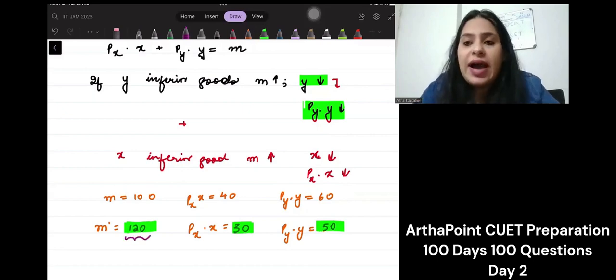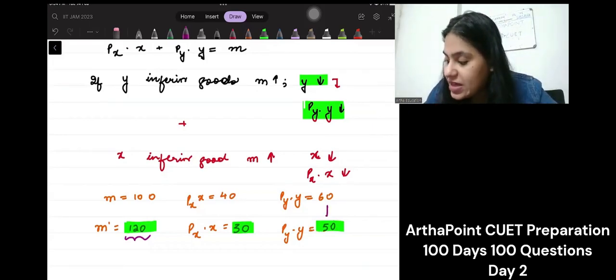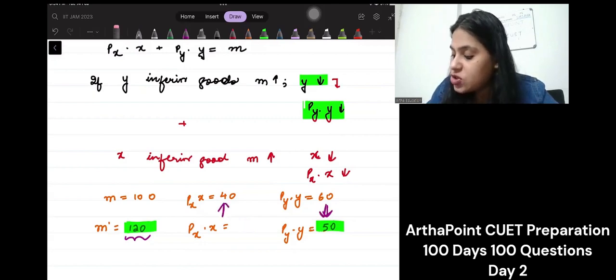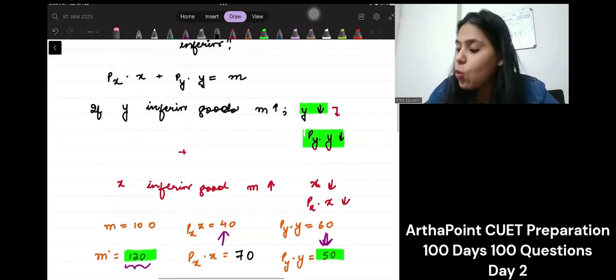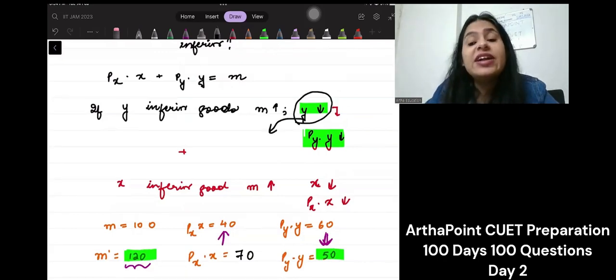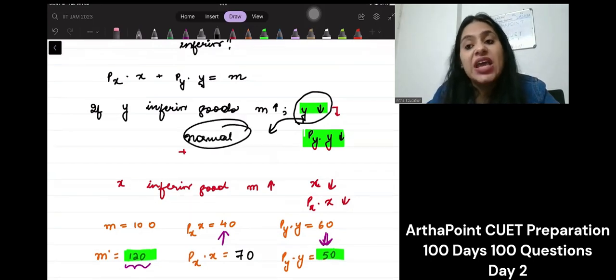I have to be on the budget line. You have to spend the entire 120 rupees. If I decrease the amount of Y, I must increase X. X will be spending 70 now. When one commodity is an inferior good, then definitely the other commodity has to be a normal good for you to be on the budget line.